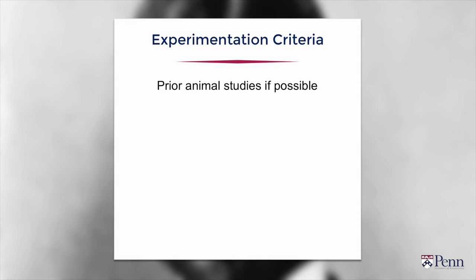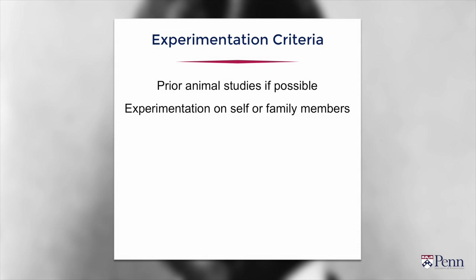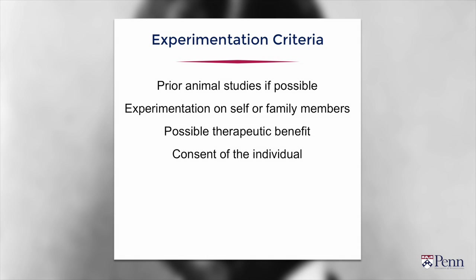At this point, a consensus was developing that experimentation was acceptable only when certain criteria were fulfilled. First, there should be prior animal studies if possible. Second, experimentation should be done on the researcher or family members of the researcher for it to be ethical. Third, there should be possible therapeutic benefit. And last, individuals who participated needed to consent to the research participation. This is a brief history of the ethical considerations related to clinical research.